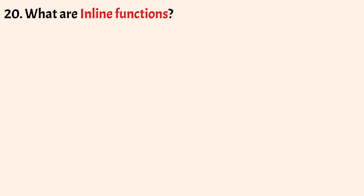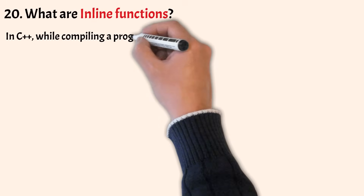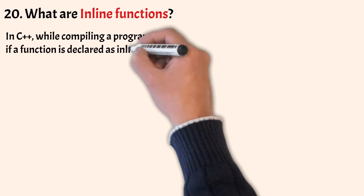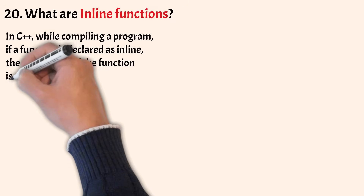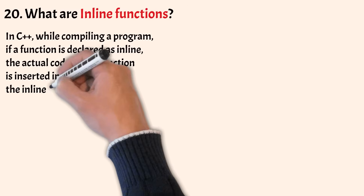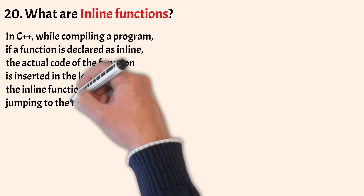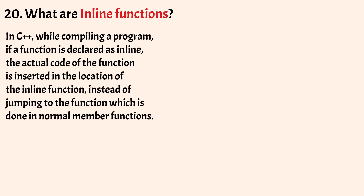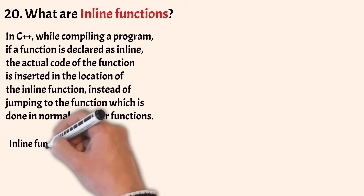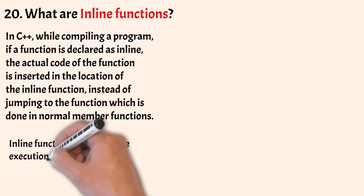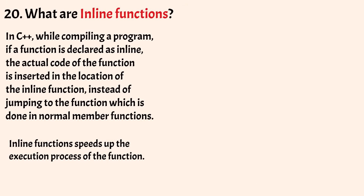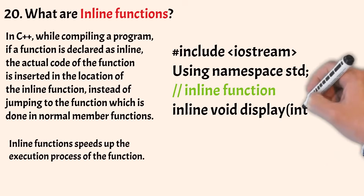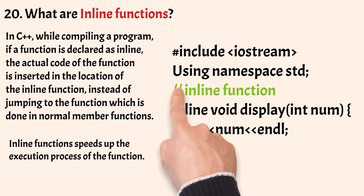Now coming to the last question: what are inline functions? In C++, while compiling a program, if a function is declared as inline, the actual code of the function is inserted into the location of the inline function call, instead of jumping to the function as is done in normal member functions. Inline functions speed up the execution process. To define an inline function, you need to specify the keyword inline before the function definition.